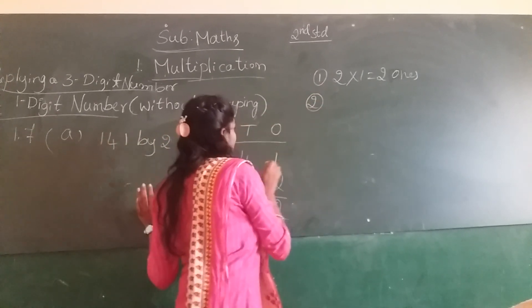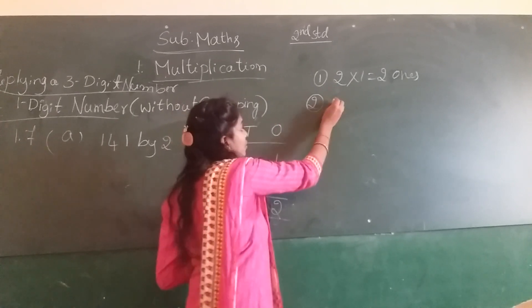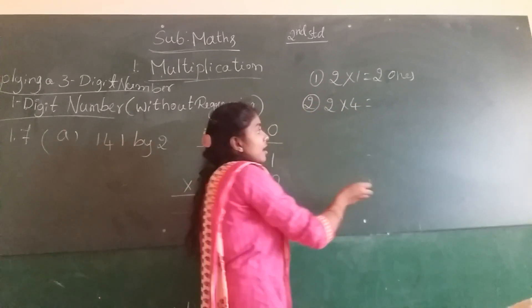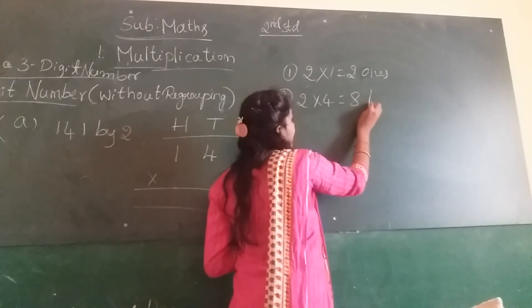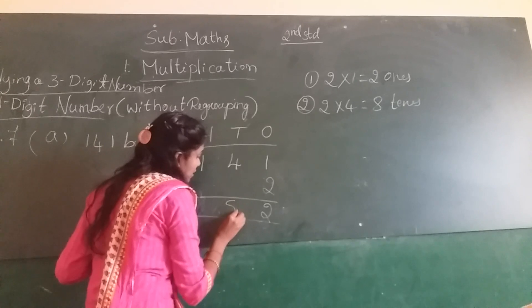Next, tens column. So 2 into 4, 2 fours are 8. 8 tens. So write in the tens column, 8.